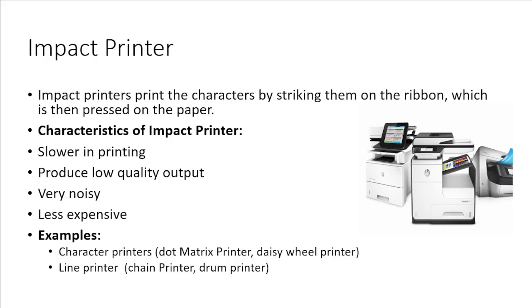Some characteristics of impact printers are: they are slower in printing and produce low quality output, and they also produce more noise during printing. Impact printers are less expensive. Examples of impact printers are character printers such as dot matrix and daisy wheel, and line printers such as chain printer or drum printer.